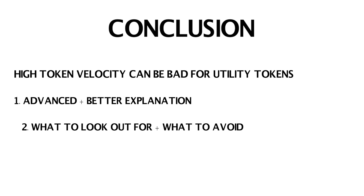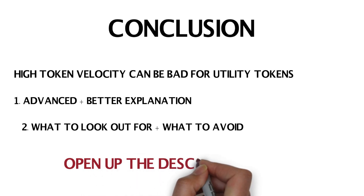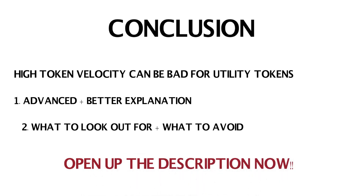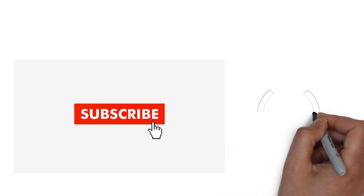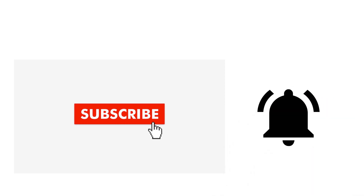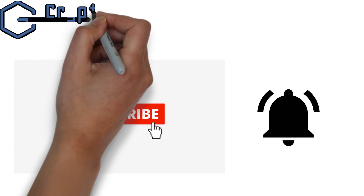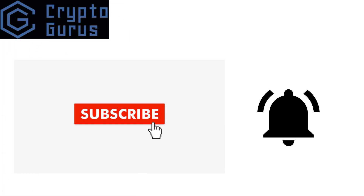Depending on when you're watching this video, these videos may have already been released. Open up the description now and have a look. If you're seeing a couple of links in there, it means those videos have been released and you can continue learning about token velocity — such an important topic when investing in cryptocurrencies. If you can't see the links yet, hit that subscription button and the notification bell next to it so you don't miss out. From Tom here at CryptoGurus, thank you so much for watching and we will speak again very soon.